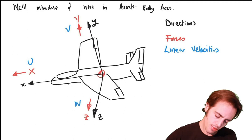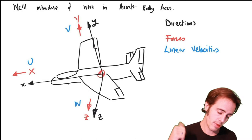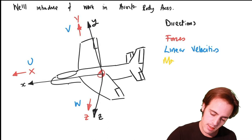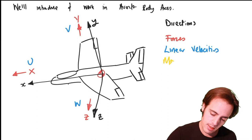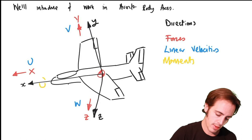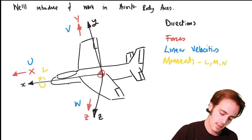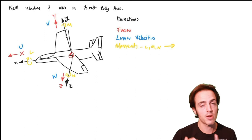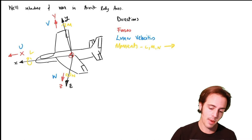We're also going to put rotations in this axis frame — moments and angular rotations. The moments are all right-handed: stick your thumb along the axis and the direction your fingertips curl around it is the direction of a positive moment. These directions are then also the direction of positive angular rates and angular displacements.